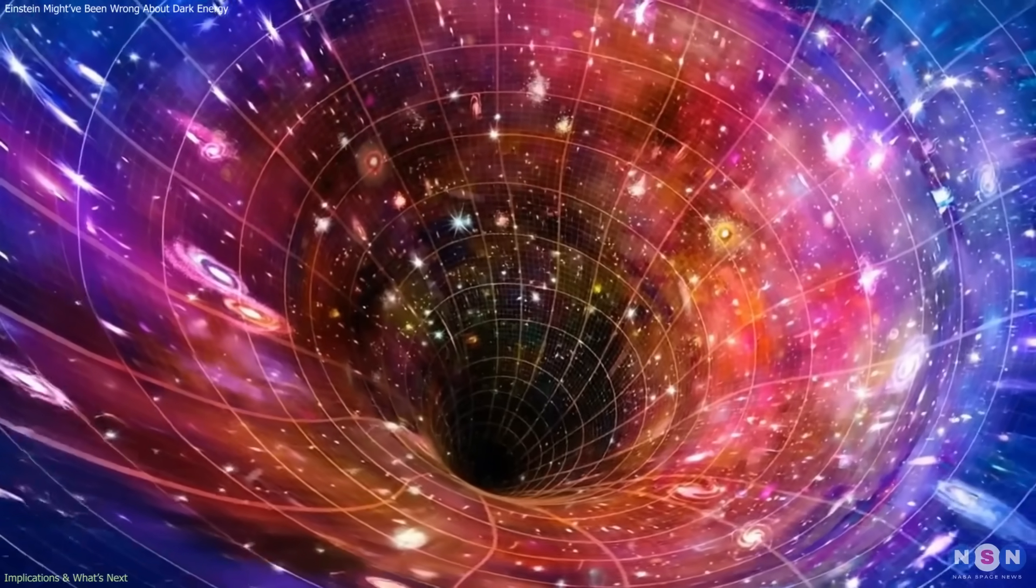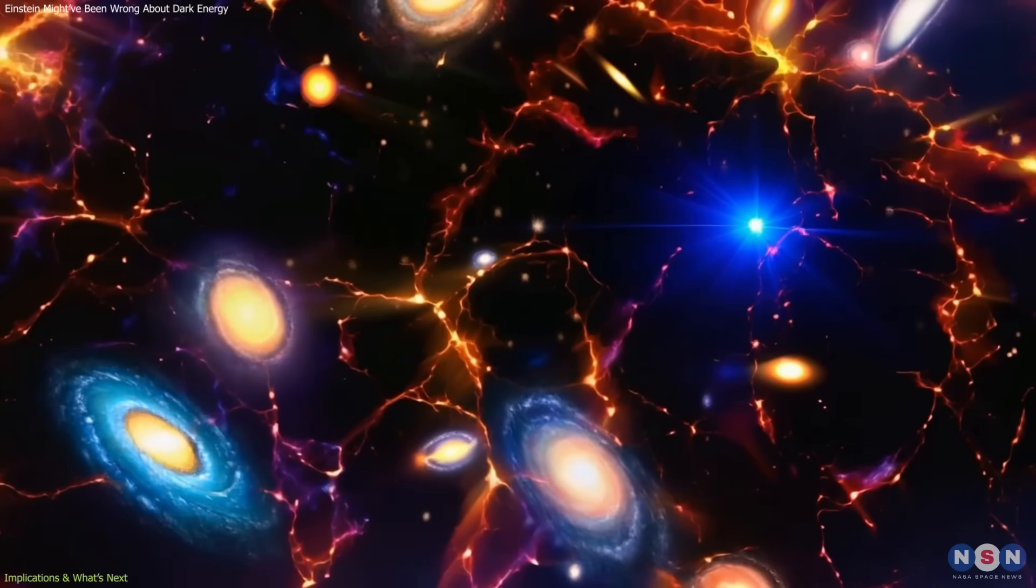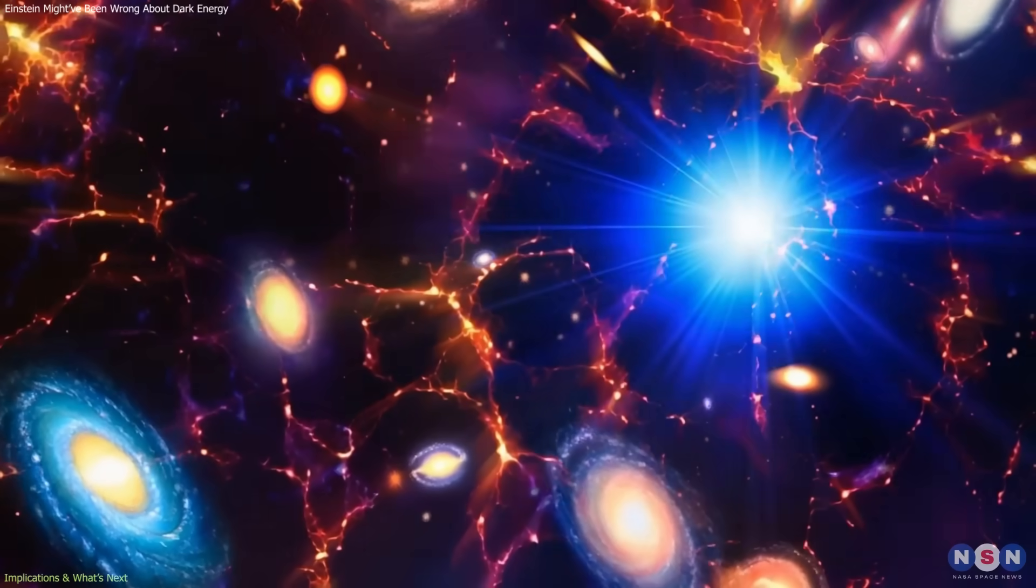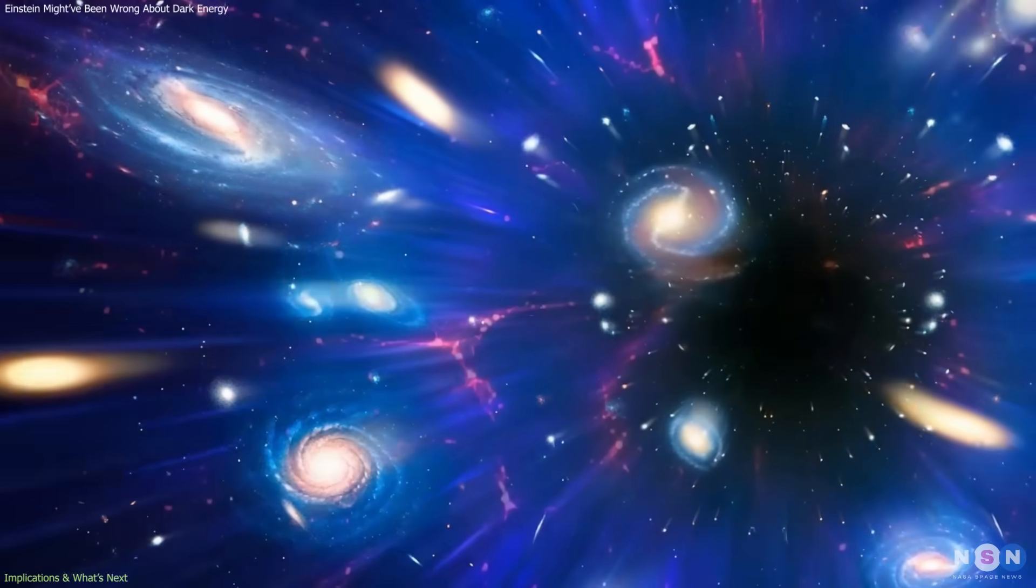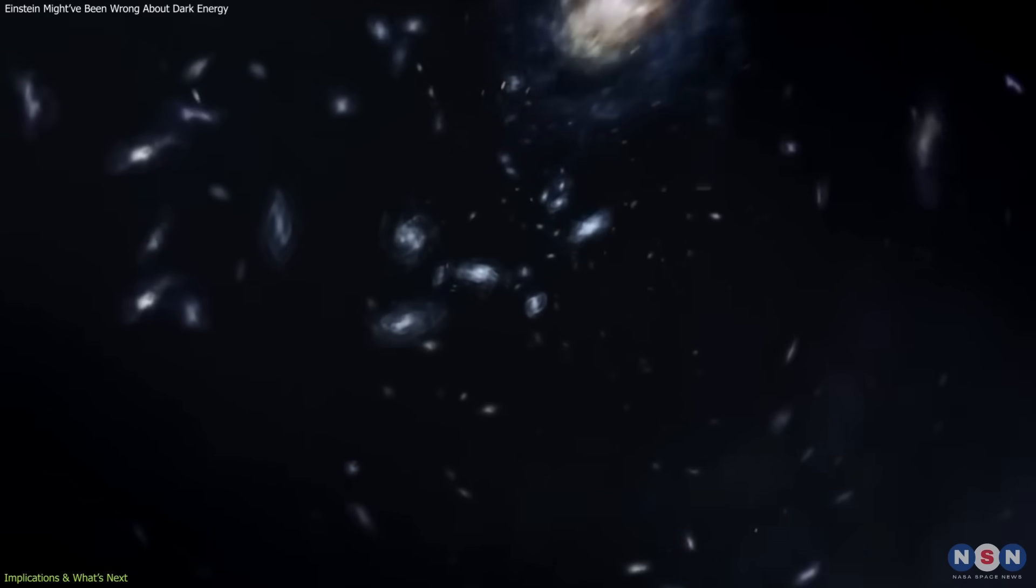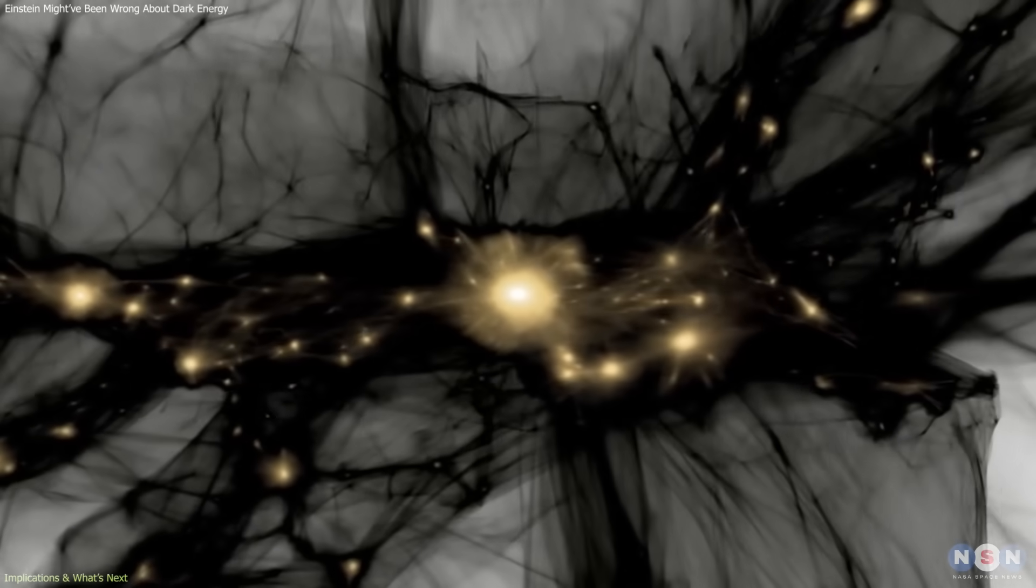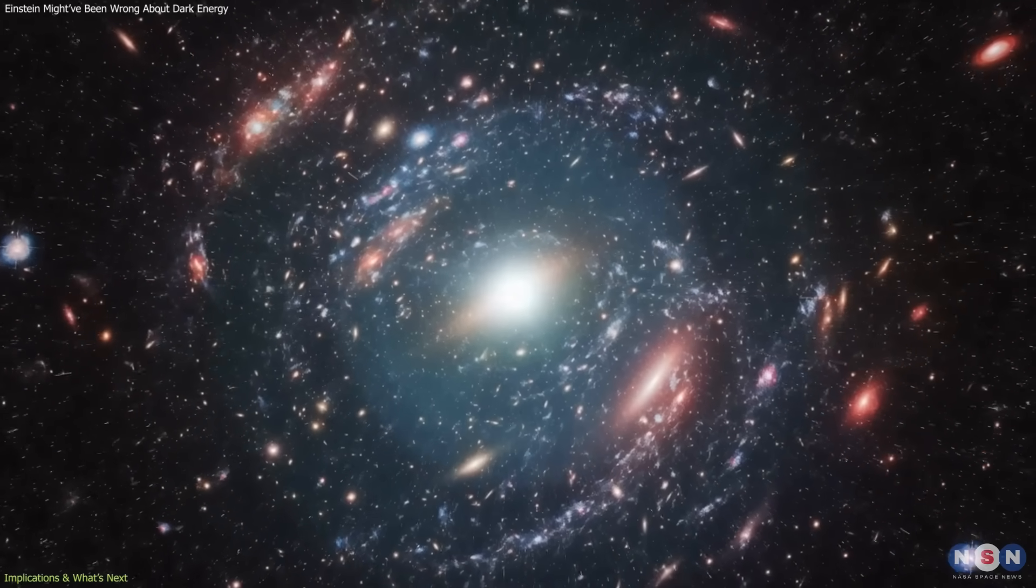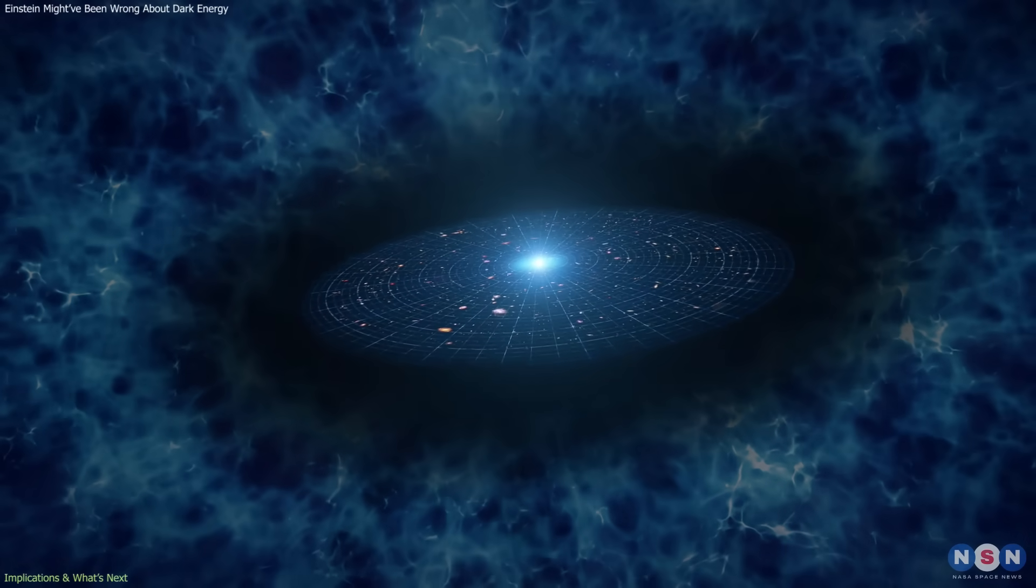This evolving picture describes a cosmos that remains dynamic but stable, expanding, cooling, and aging over trillions of years. Practically, such a shift would affect how astronomers interpret every measurement tied to cosmic expansion: distances, galaxy clustering, and even the distribution of dark matter. Precise knowledge of dark energy's behavior feeds directly into the values of key cosmological parameters, so verifying whether it changes is essential.